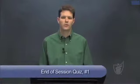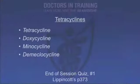Now let's go over the end-of-session quiz answers. Question 1: Classify antibiotics into appropriate drug categories. Tetracyclines all end in '-cycline': tetracycline, doxycycline, minocycline, and demeclocycline. For aminoglycosides, use the mnemonic GNATS — Gentamicin, Neomycin, Amikacin, Tobramycin, Streptomycin. The remaining category is macrolides and ketolides.